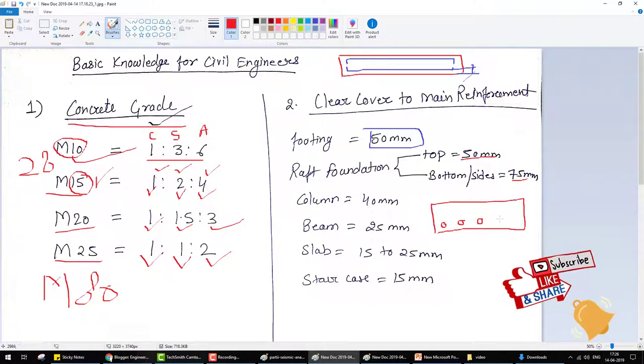Bottom reinforcement and these are the top reinforcement. The top clear cover is 50mm, and the side clear cover and the bottom clear cover is 75mm.